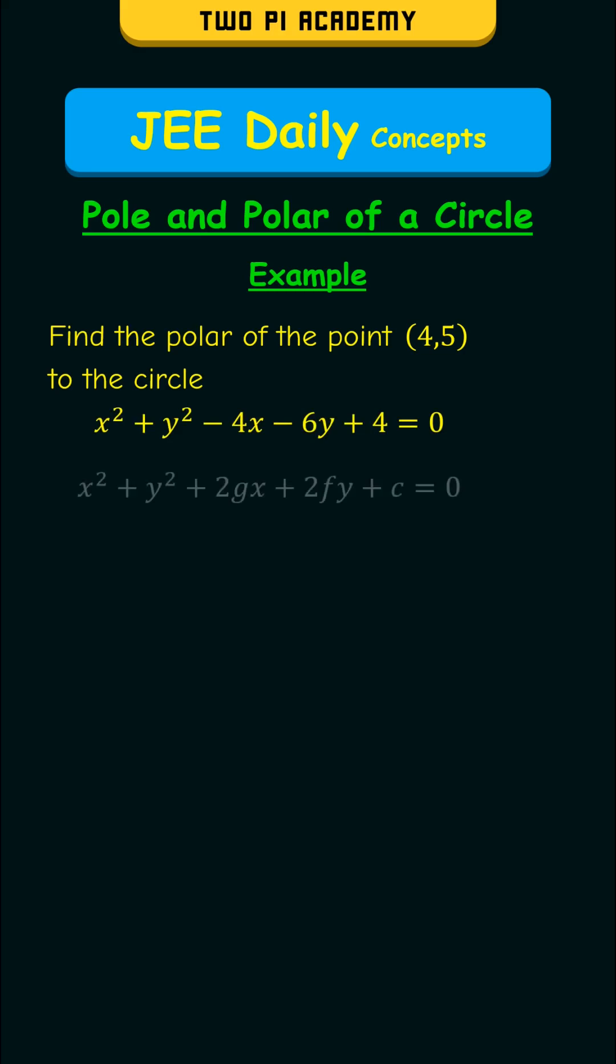By comparing this equation of circle with the general equation, we get g is equal to minus 2, f is equal to minus 3, and c is equal to 4.